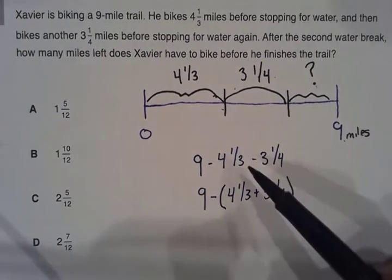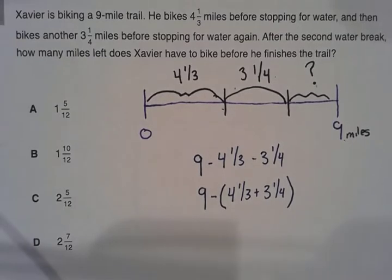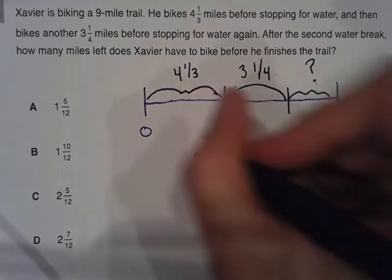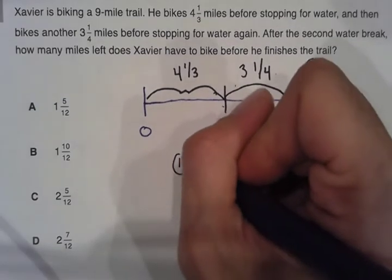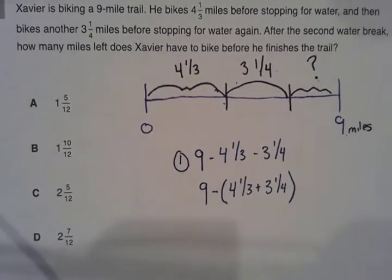So what we're going to do, we're going to do one of these strategies, and I challenge you to do another strategy to see if we did the correct work. So we're going to do strategy number one. Nine minus four and one-third minus three and one-fourth.